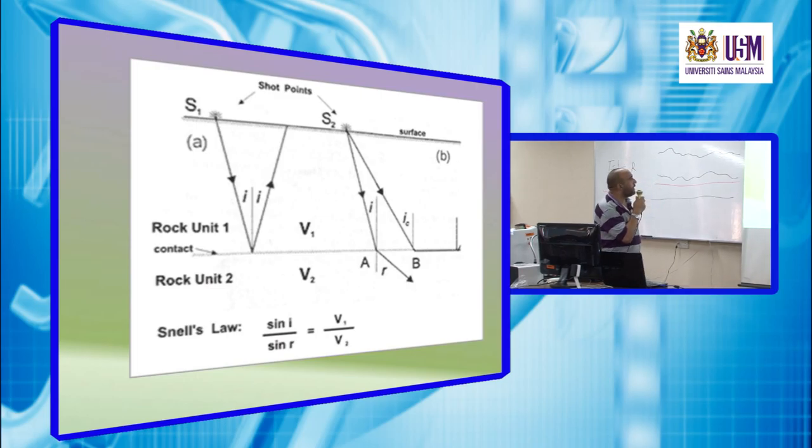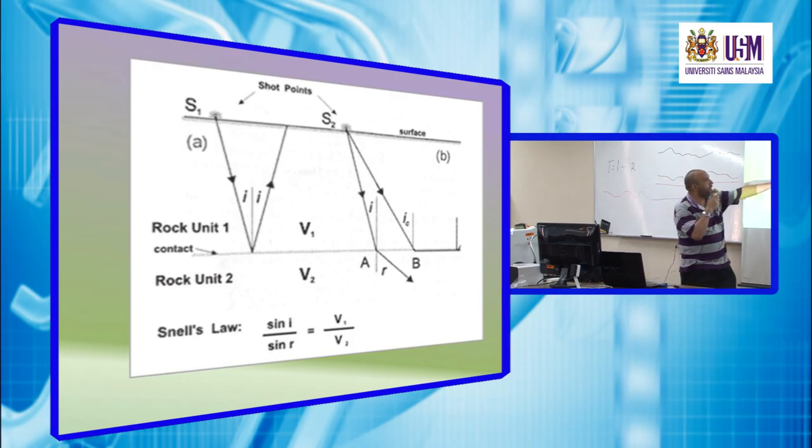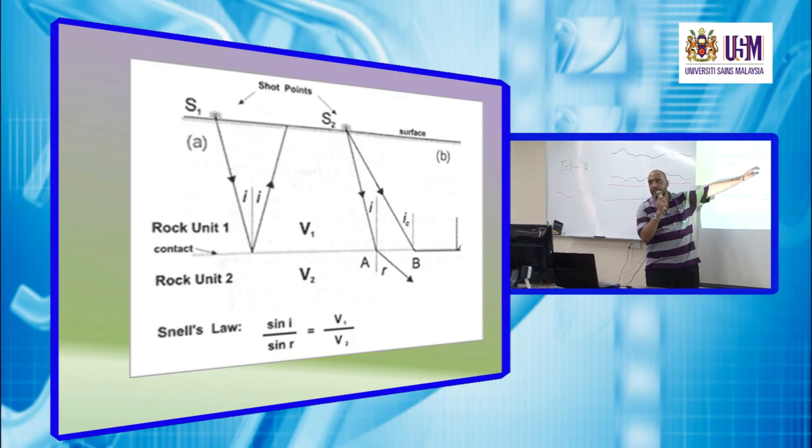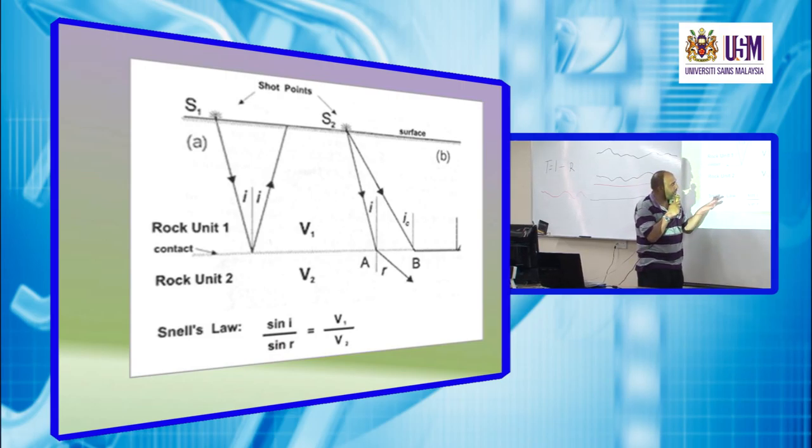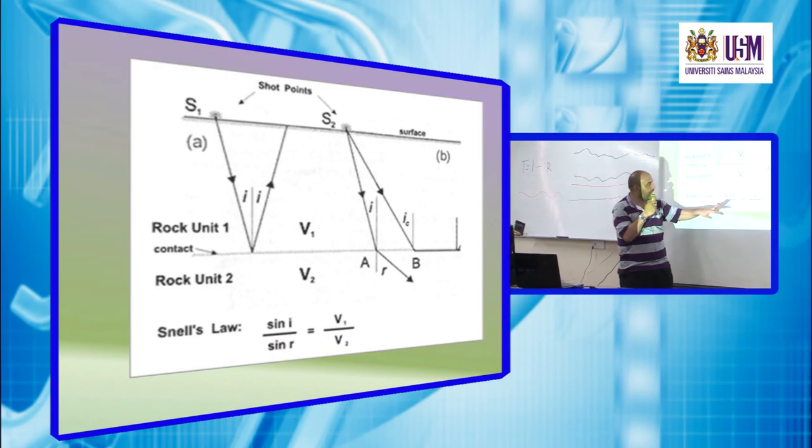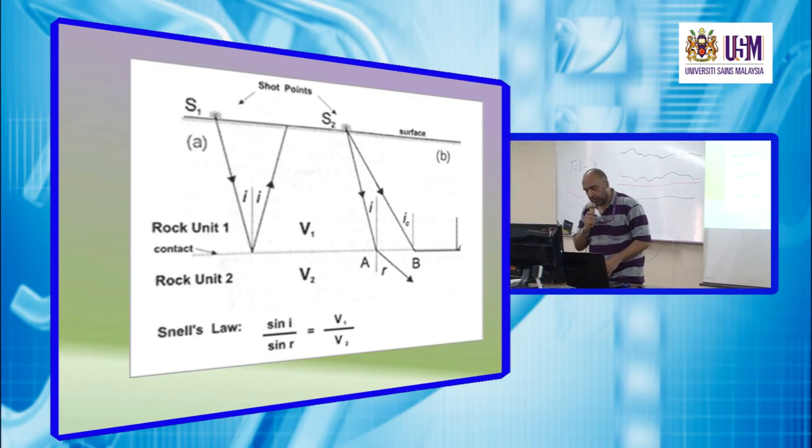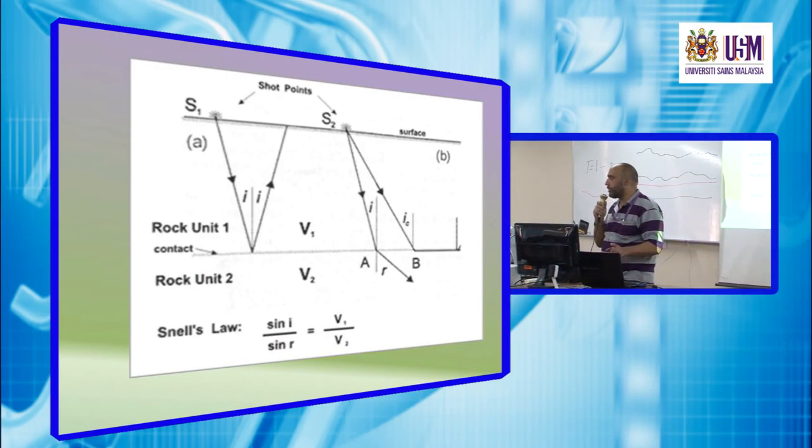This graph is a schematic view of what happens in reflection. This is the law of reflection. The angle of incidence equals the angle of reflection. And this one is the Snell law, which represents, which says that the sine of incident angle divided by the sine of refractive angle equal V1 divided by V2. And this relation, the Snell law is one of the pillars of seismic method.